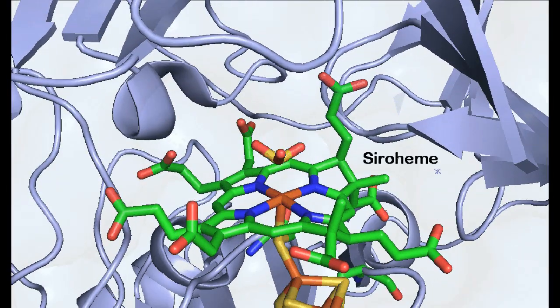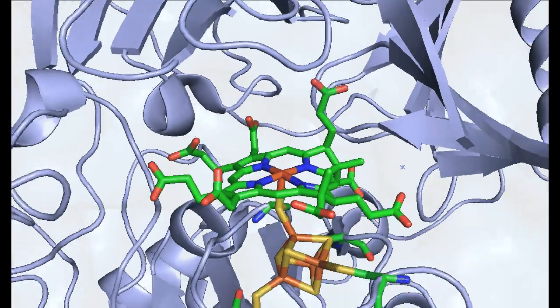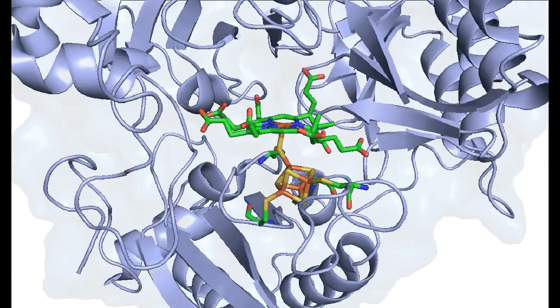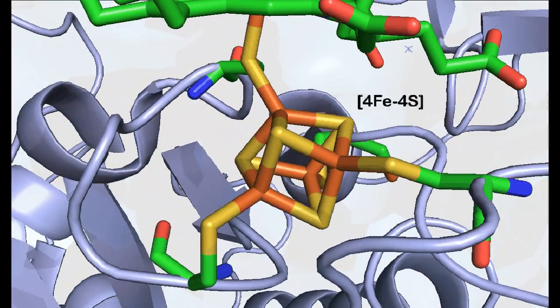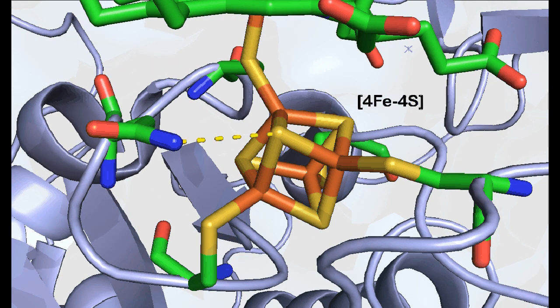This enzyme has a heme cofactor that is surrounded by positively charged amino acids that help bind and protonate sulfite. A four iron, four sulfur cluster is covalently bound to the heme, forming a cofactor that is found nowhere else in biology. In addition, numerous weak interactions with the protein scaffold, such as hydrogen bonding, tune the activity of the metal complexes.